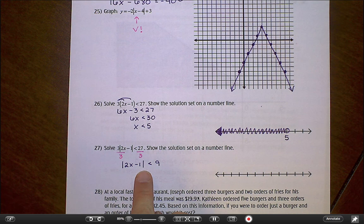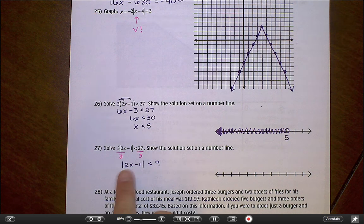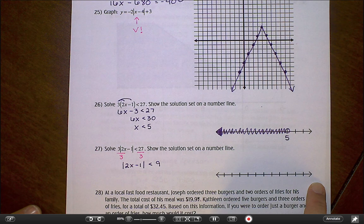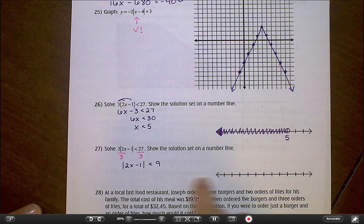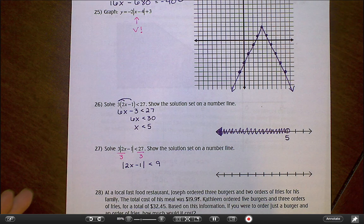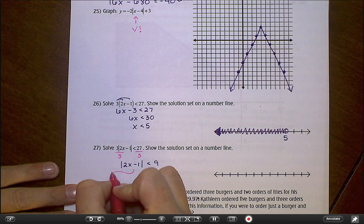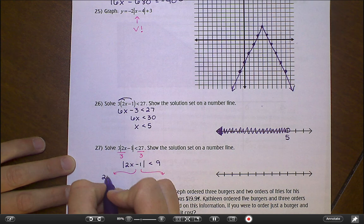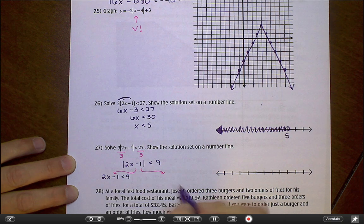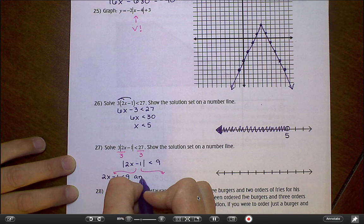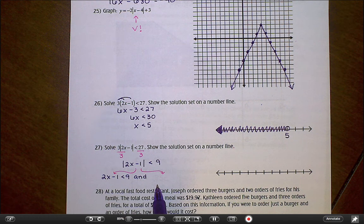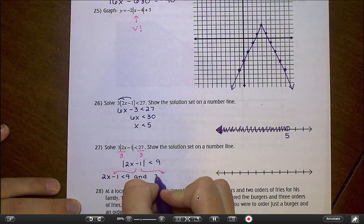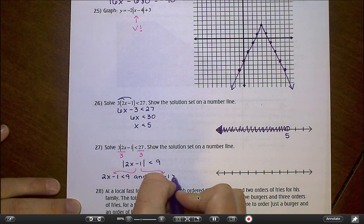Think about what this is saying. This is saying that this number inside of here, whatever it is, has to be less than 9 spaces away from 0. That means it can go out to positive 9, but it can only go down to negative 9 in this direction to stay within those parameters. So right here, we're going to write two separate inequalities. We're going to have one that says 2x minus 1 is less than 9. But then we also have to have, and this is going to be an and situation, because we have to stay below 9 but above negative 9 at the same time.